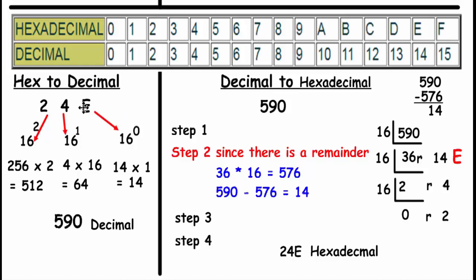Let's look at the E. Now, we know E is equal to 14, so 16 to the power of 0, so it's 14 times 1, or 14. And the next one, we have 4 times 16 to the power of 1, so since this is a 4, 4 times 16 is 64. And the last one, we have 2 times 16 to the power of 2, so it's 256 times 2, or 512. We add up 512 plus 64 plus 14, we end up with 590, which is our decimal number.